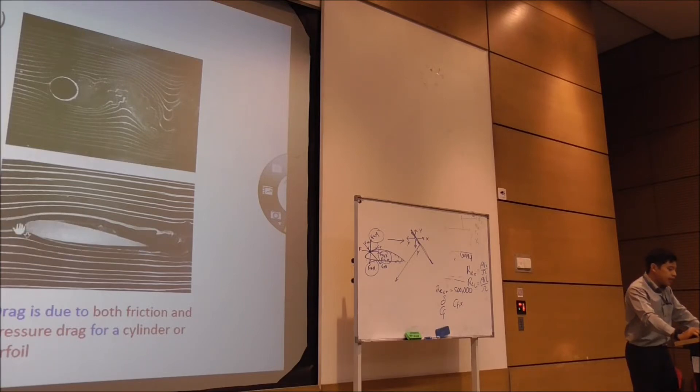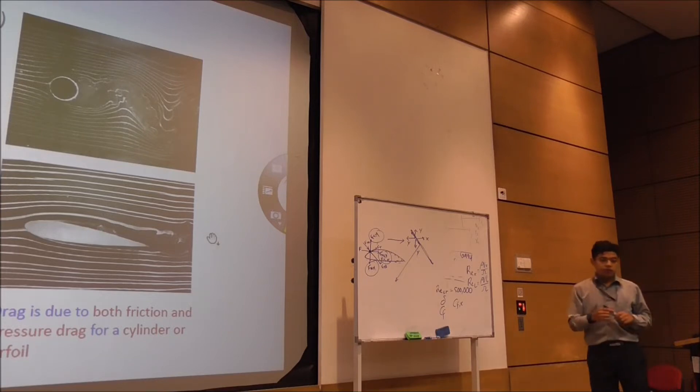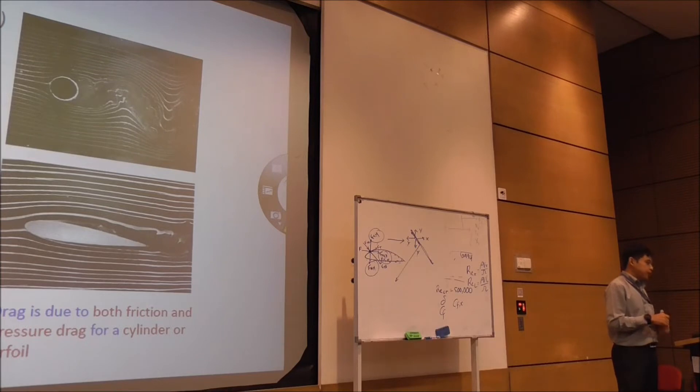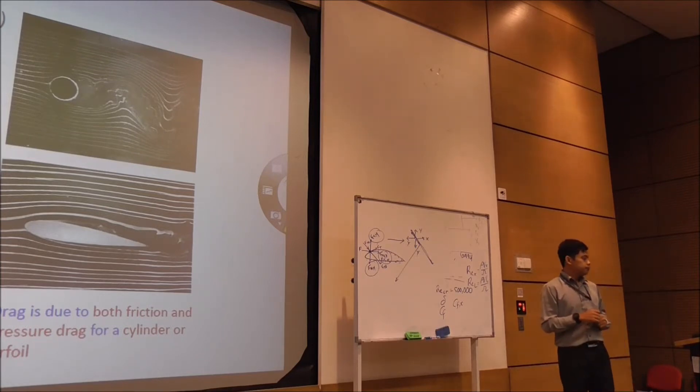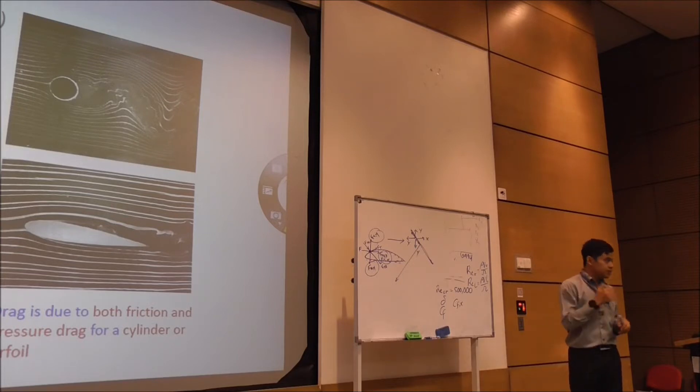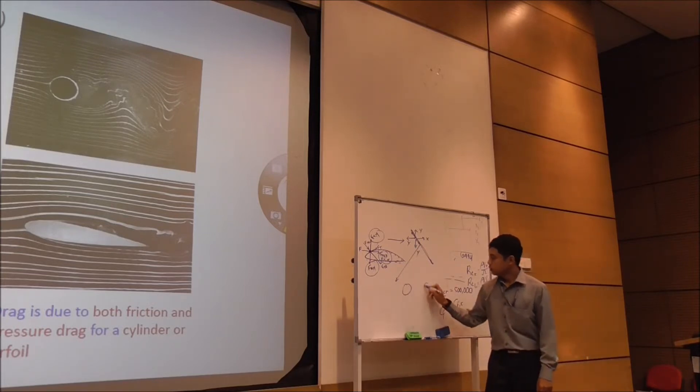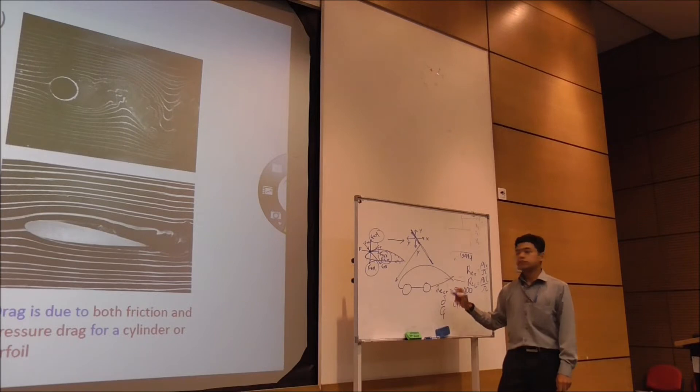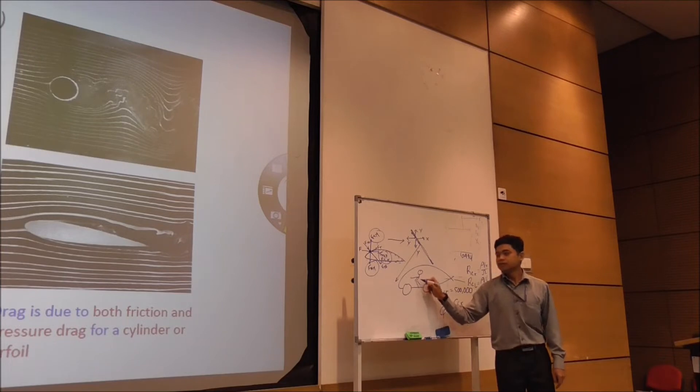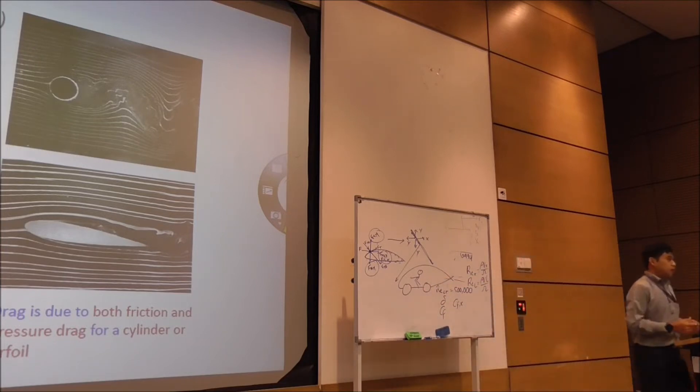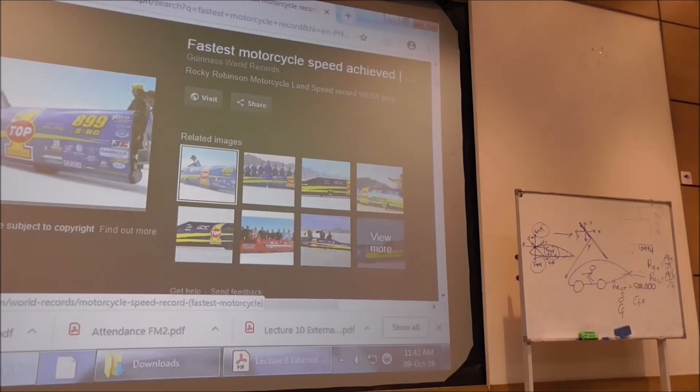This is the most aerodynamically efficient shape. So if you are looking at the record of a motorcycle in the Sahara Desert, usually they will have that motorcycle covered like that. The driver, the rider, will be there.